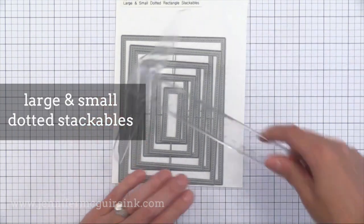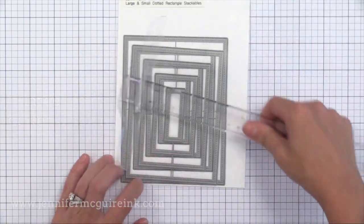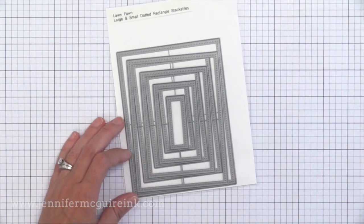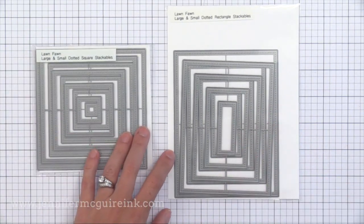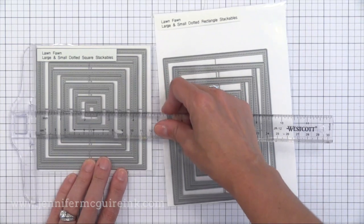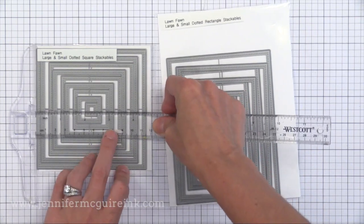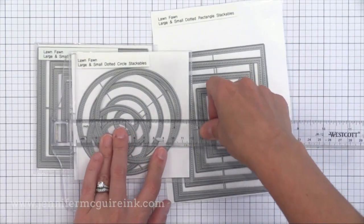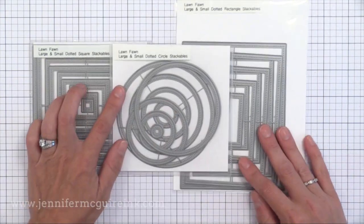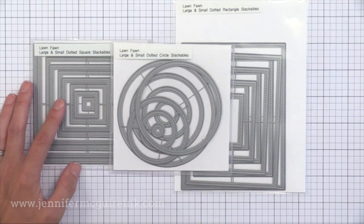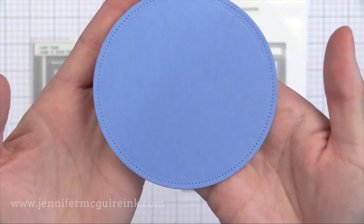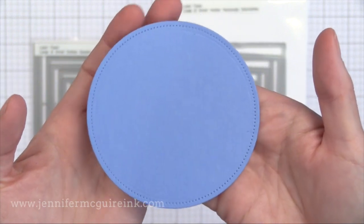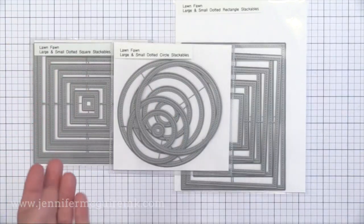Lawn Fawn has great stackable sets. This is the large and small dotted rectangle stackable sets together in one envelope. So there's the large stackable set and the small. They're sold separately but I have them stored together. Here is the square set. This one goes to four and a half by four and a half which is a nice size for a square card. In here we have the circles. The biggest one is four inches in diameter. This does do the little dots around the inside of the cutting edge. It's a nice finishing touch and a little more interesting than a plain die cut. So there are small and large in all the square, rectangle, and circles.